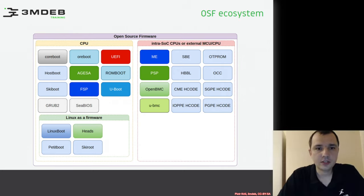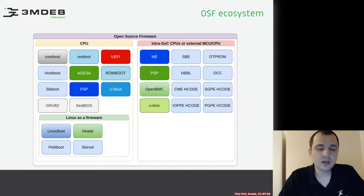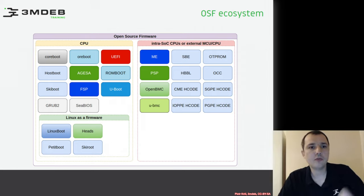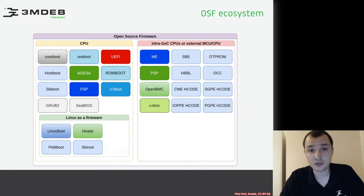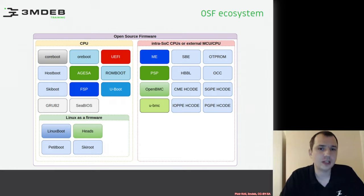This slide is very interesting and I would like to hang on it for a couple of minutes. I tried to sketch here the open source firmware ecosystem. As you can see, there are some patterns here. We should divide the firmware — open source or not open source — because not all these components are open source firmware. It's more like an enumeration of every possible firmware in the ecosystem.